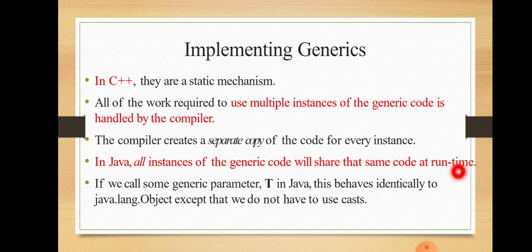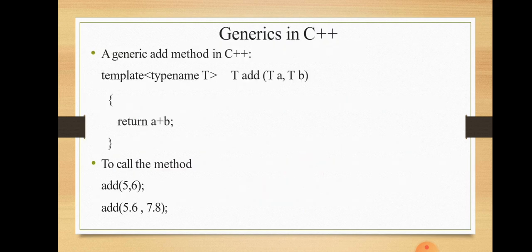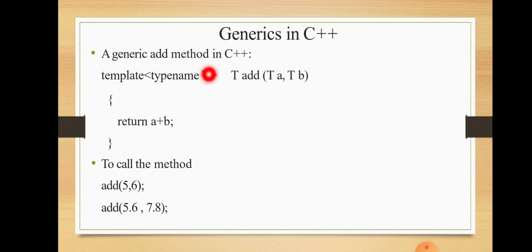In Java, all instances of the generic code share the same code at runtime. If we call some generic parameter T in Java, this behaves identically to java.lang.Object, except that we do not have to use casts. We can use generic parameters or the generic programming concept in Java using different casting information.